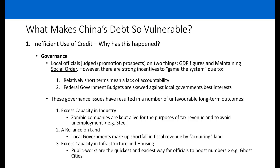The second undesirable outcome from this imbalance is a reliance on land. Local governments seize land from local agriculture to use for public works, to subsidize and attract local businesses, and to use as collateral to raise debt — all to boost their GDP numbers for promotion prospects. The third outcome is excess capacity in infrastructure and housing.